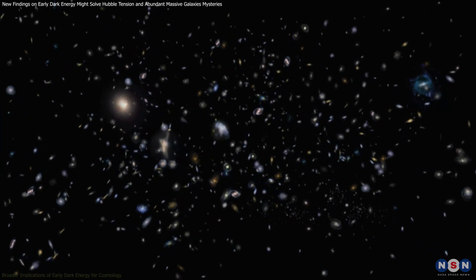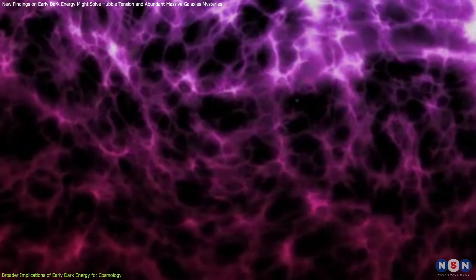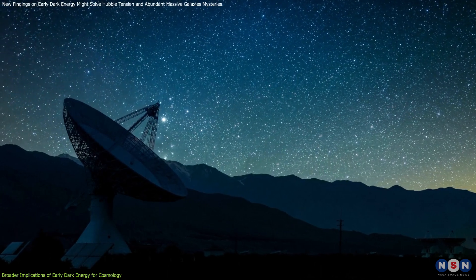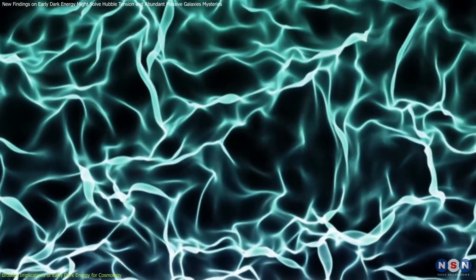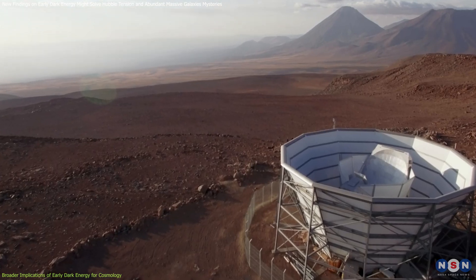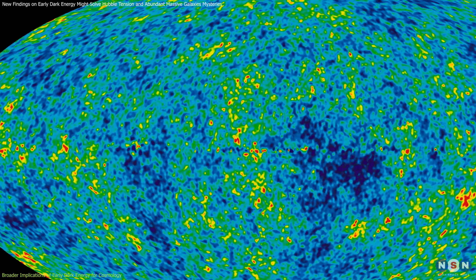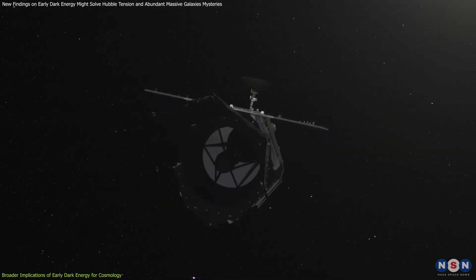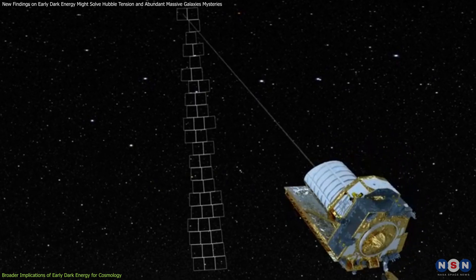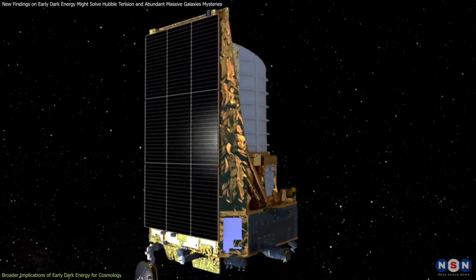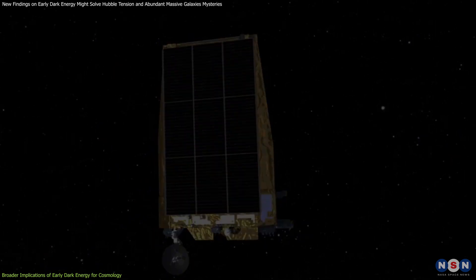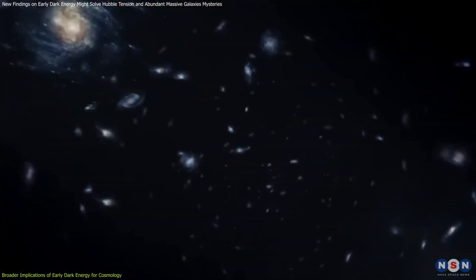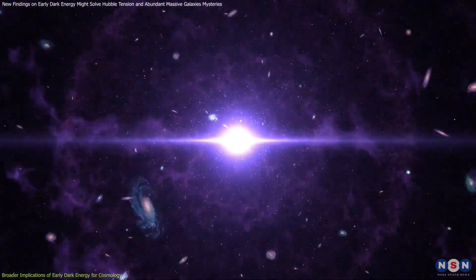Beyond solving the Hubble tension and the mystery of early galaxies, early dark energy could have even broader implications for cosmology and other fields of physics. To fully understand its impact, we need to look at what future missions and interdisciplinary research could tell us about this mysterious force. Upcoming missions like the Simons Observatory and CMBS-4 are designed to measure the CMB with unprecedented precision. Similarly, large-scale surveys like Euclid and the Nancy Grace Roman Space Telescope aim to map the distribution of galaxies and dark matter throughout the universe. These missions could provide crucial evidence for or against early dark energy by looking for specific signatures. Scientists would search for subtle variations in the cosmic microwave background or galaxy distributions that could indicate a brief phase of accelerated expansion in the universe's early history.